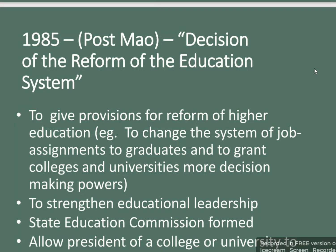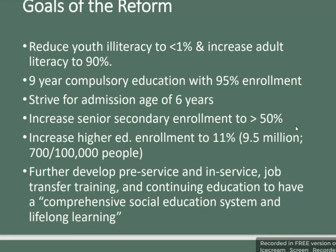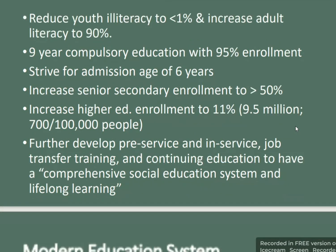The 1985 reform also provided for reforms of higher education, changed the system of job assignments for graduates, and granted colleges and universities greater decision-making authority. To strengthen educational leadership, a State Education Commission was formed, allowing the president of a college or university to serve as CEO. Goals of the reform included reducing youth illiteracy by 1%, increasing adult literacy to 90%, achieving 95% enrollment in nine-year compulsory education, striving for a school admission age of six, increasing senior secondary enrollment to 50%, increasing higher education enrollment to 11%, and developing a comprehensive social education system and lifelong learning.